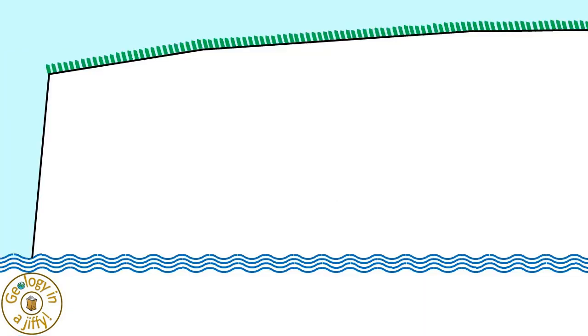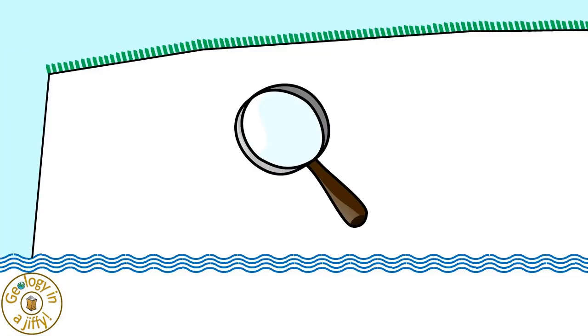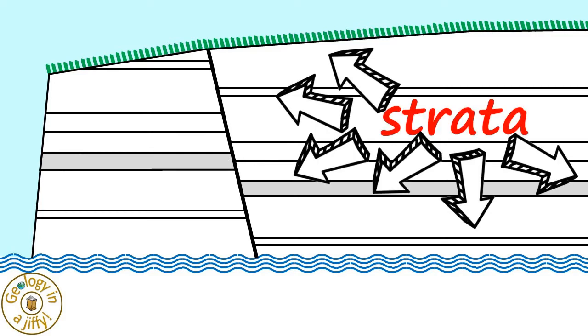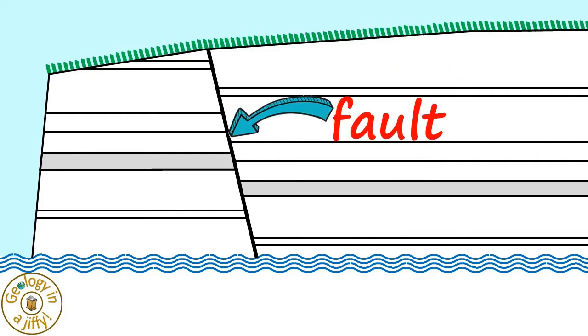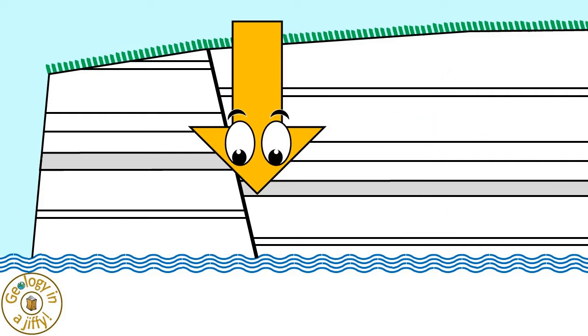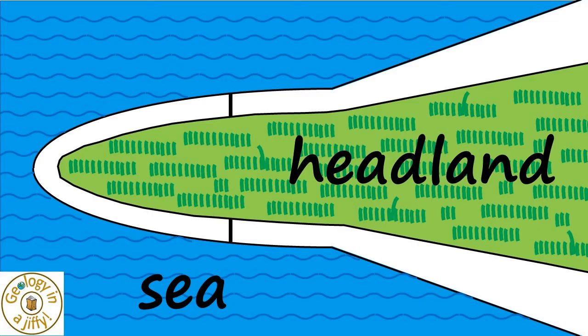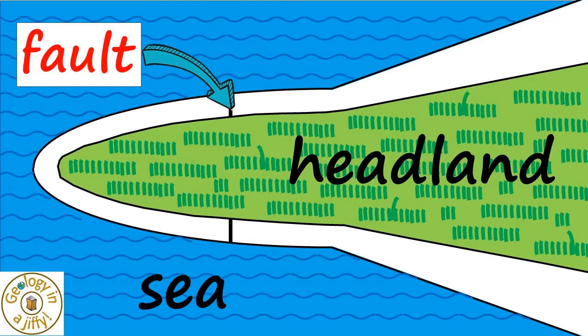The headland is made of white rock. When we examine the cliff more closely, we see it is composed of strata — parallel layers of differing thickness beds of rock — these all having been subjected to forces, resulting in a fault running through the headland. Viewed from above, we can clearly see how the headland juts out into the sea from the land, the fault being exposed in the cliff faces on either side of the headland.